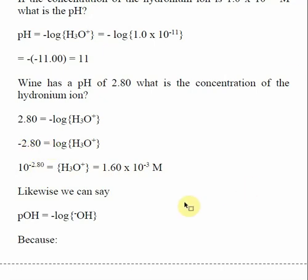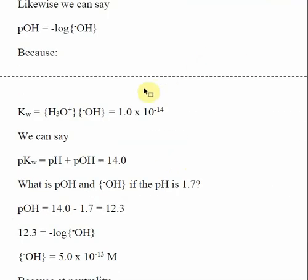Even though we typically talk about acidity and basicity in terms of pH, a lot of our calculations will give us information about hydroxide. So we also need to consider pOH. The prefix 'p' is just a generic function meaning the negative log of something. pOH is the negative log of the concentration of hydroxide. The KW equilibrium expression says that the concentration of hydronium and hydroxide are linked by the constant KW. If we take the negative log of this whole expression, we get pKW, which is the negative log of 1 times 10 to the minus 14th, which equals 14. So pH plus pOH equals 14.